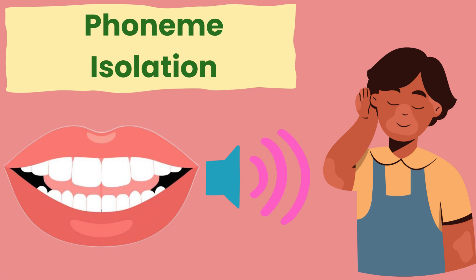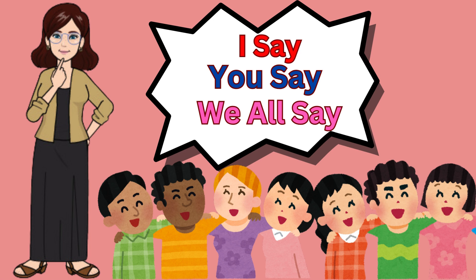Phoneme isolation. I will say a word, you will repeat the word, then we will say the word together and isolate the beginning initial sound. Example: I say one. You say one. We say one. What sound? I say sink. You say. We say sink. What sound? Ssss.